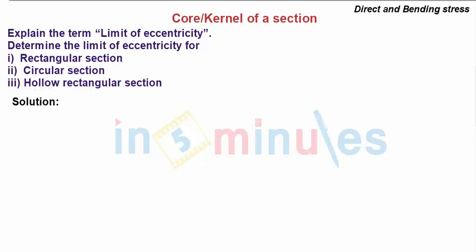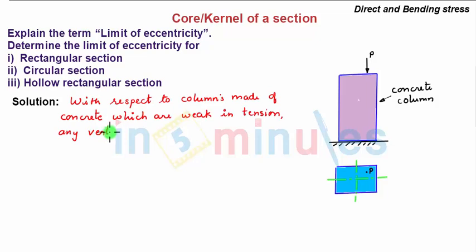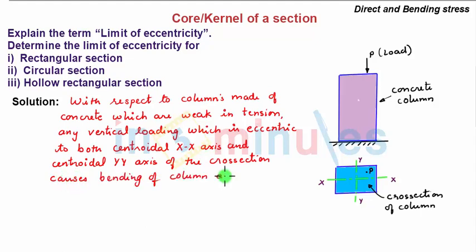Solution: With respect to columns made of concrete which are weak in tension, any vertical loading which is eccentric to both centroidal x-axis and centroidal y-axis of the cross section causes bending of column and produces tension at respective part.